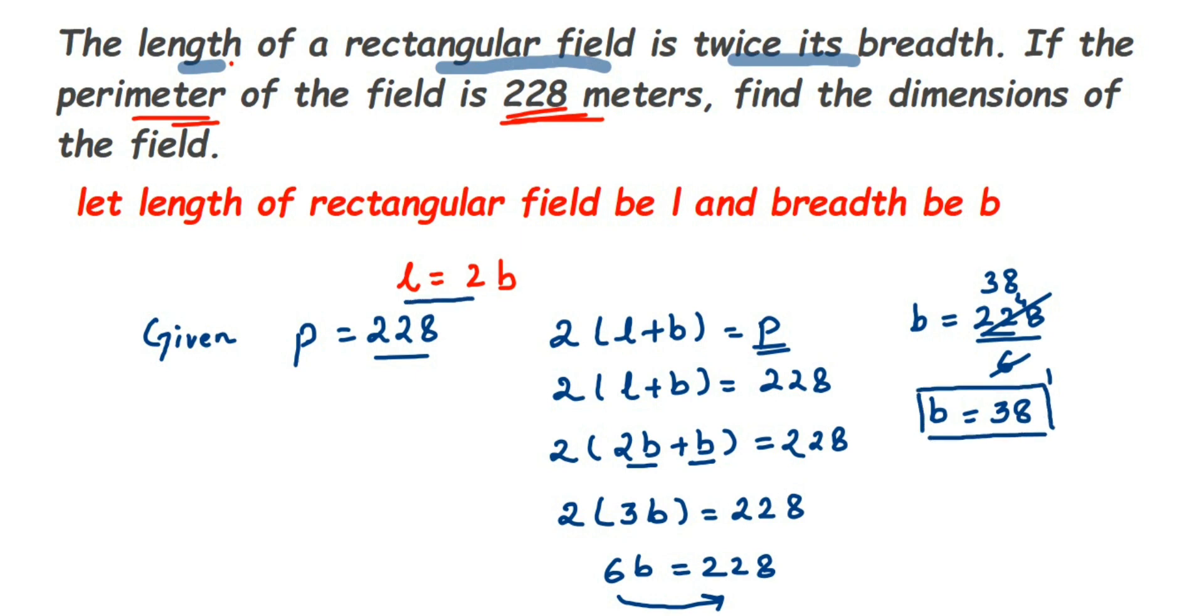So length is equal to 2 into breadth. In place of breadth I'm going to put 38, so 2 into 38 is 76. So we got here 76 meters. The whole dimensions are given in meters, so it will be 76 meters and breadth will be also 38 meters.